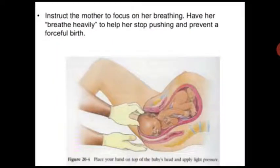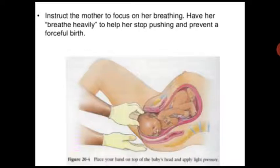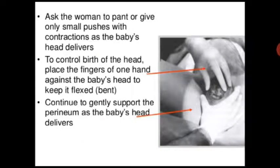Instruct the mother to focus on her breathing — have her breathe heavily to help her stop pushing and prevent a forced birth. Place your hand on top of the baby's head and apply light pressure. Ask the mother to give only small pushes with the contraction as the baby's head delivers. To control birth of the head, place fingers on one hand against the baby's head to keep it flexed.